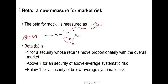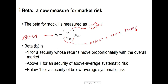divided by the standard deviation of the market. The market is everything, but since we can't really measure everything — real estate, human resources, and all that — what we do is we say that the market is just going to be a stock index. We assume that the stock index is going to be the best reflection of how the market is doing.